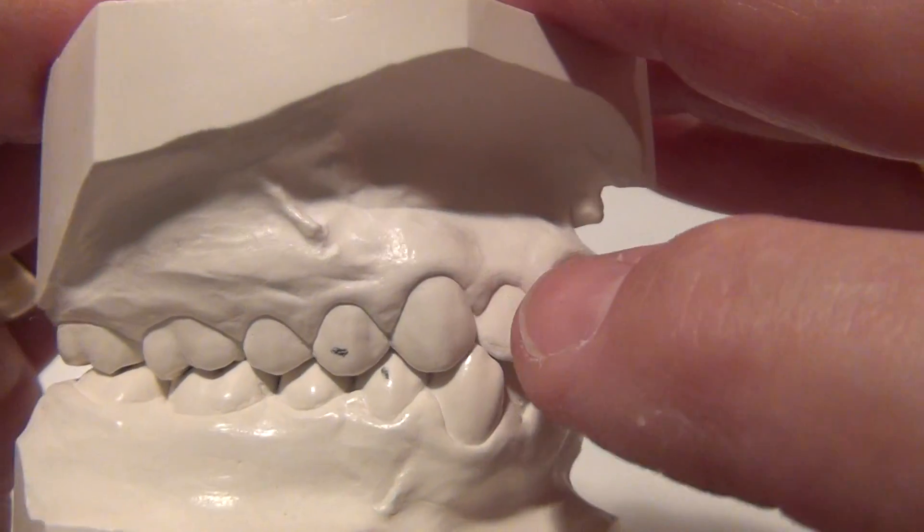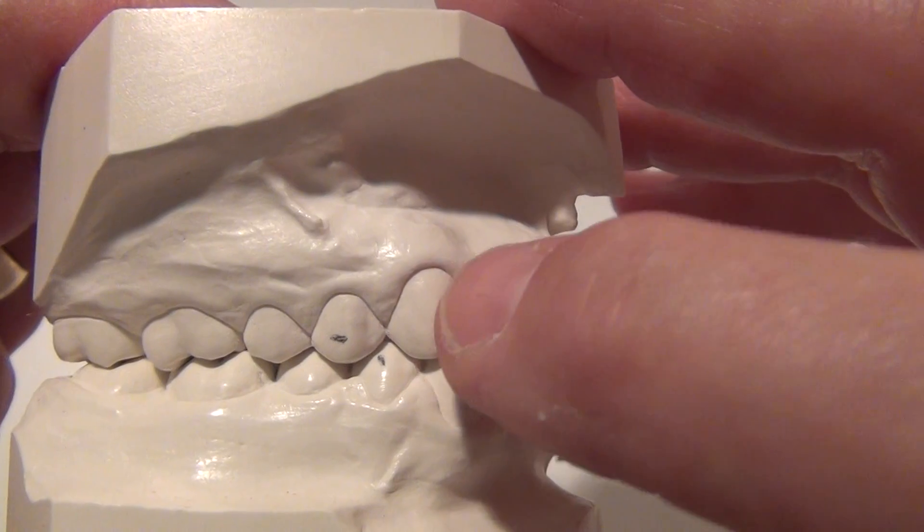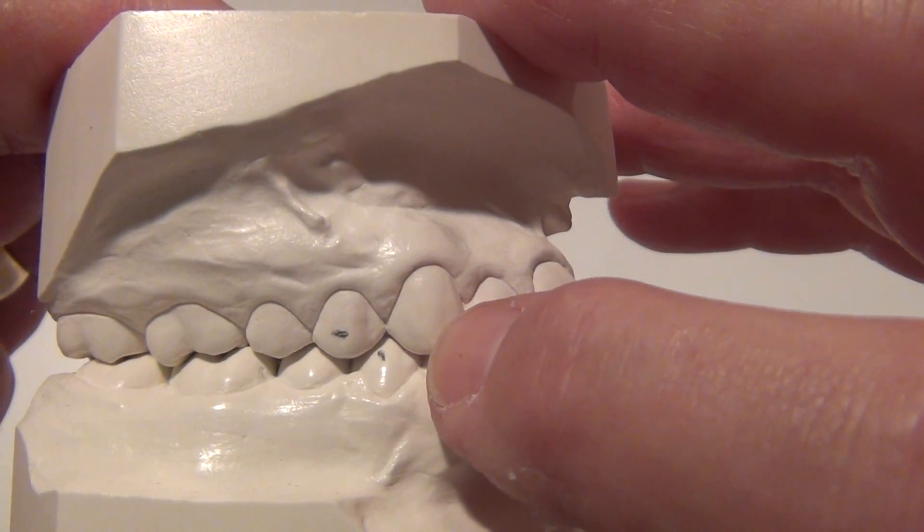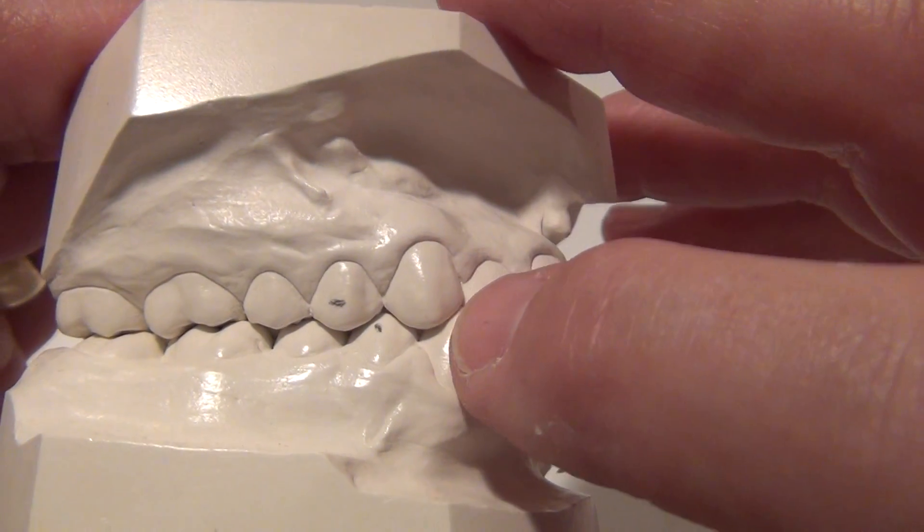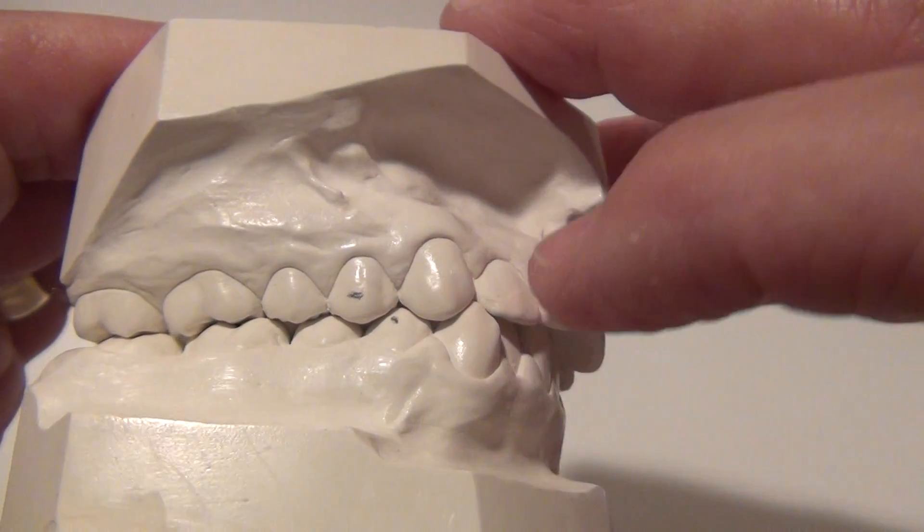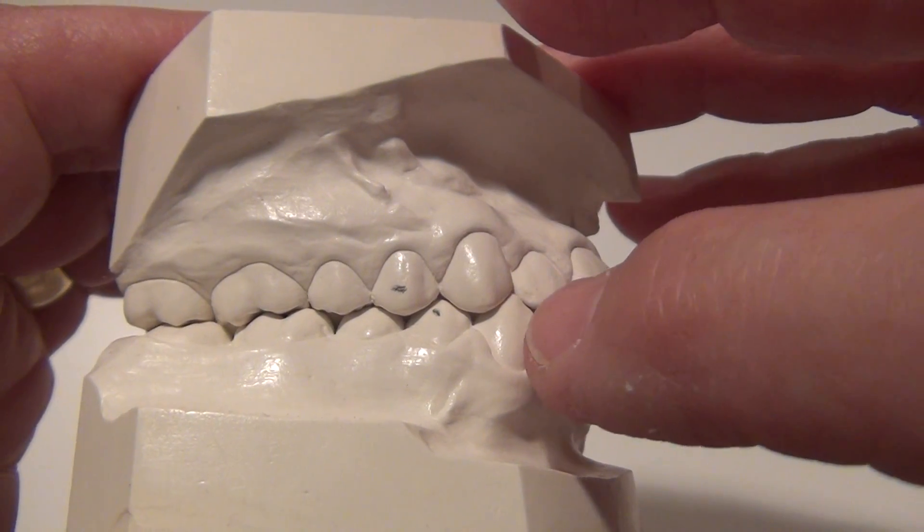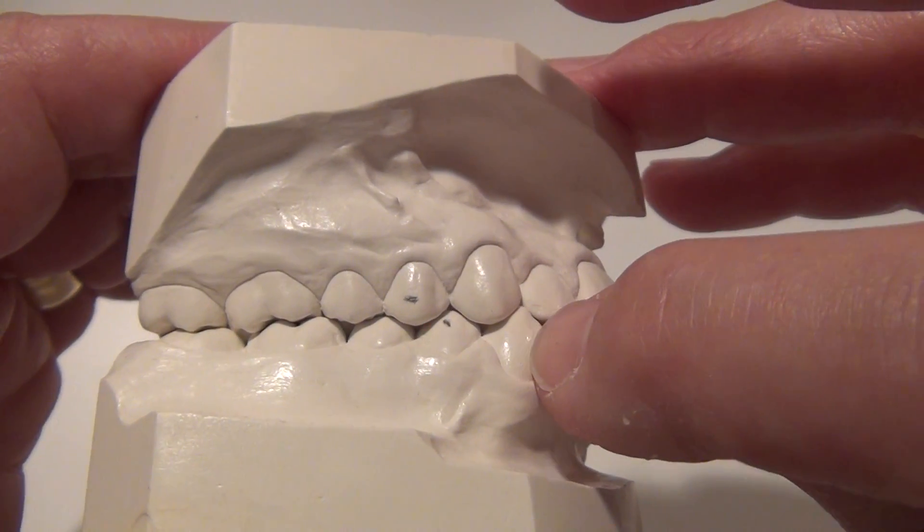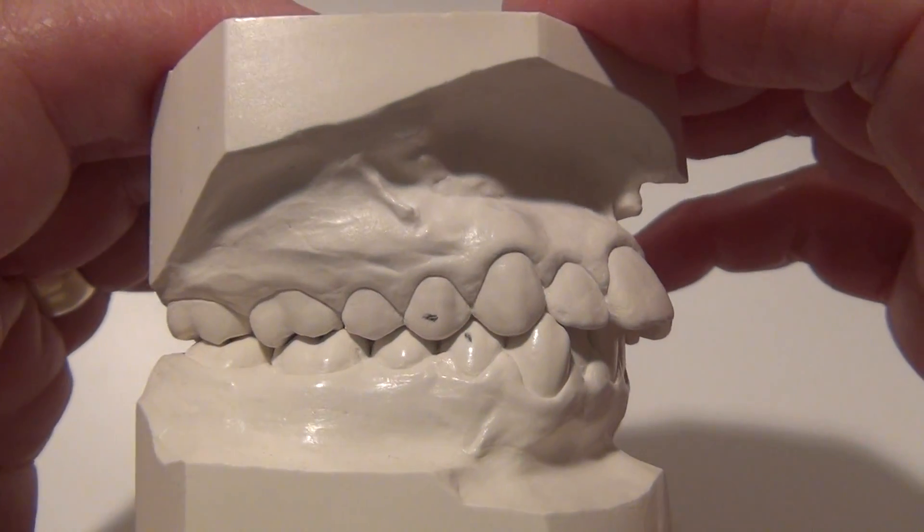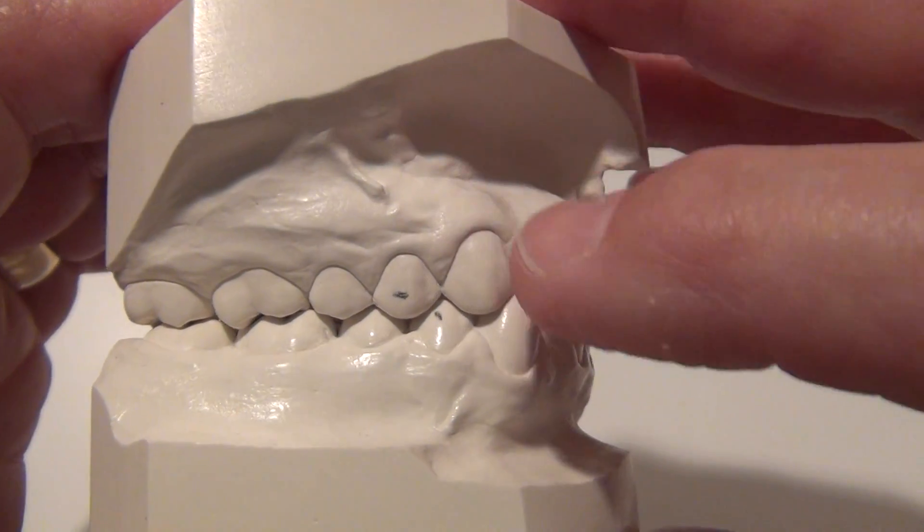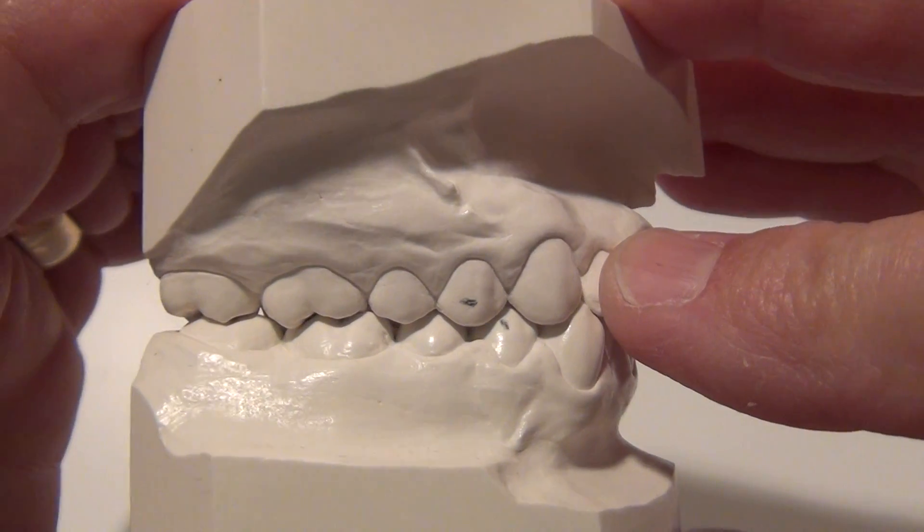Let's now look at the cuspid relationship. I've got dots on the first bicuspids to help you see that these are the cuspids that we're talking about, specifically the upper. By definition, a class 1 cuspid relationship is a relationship in which the cusp tip of the upper cuspid fits into the embrasure, the space, or the contact area more specifically, in between the lower cuspid here and the lower first bicuspid with the dot on it there. This case is a class 1 molar and a class 1 cuspid right side.